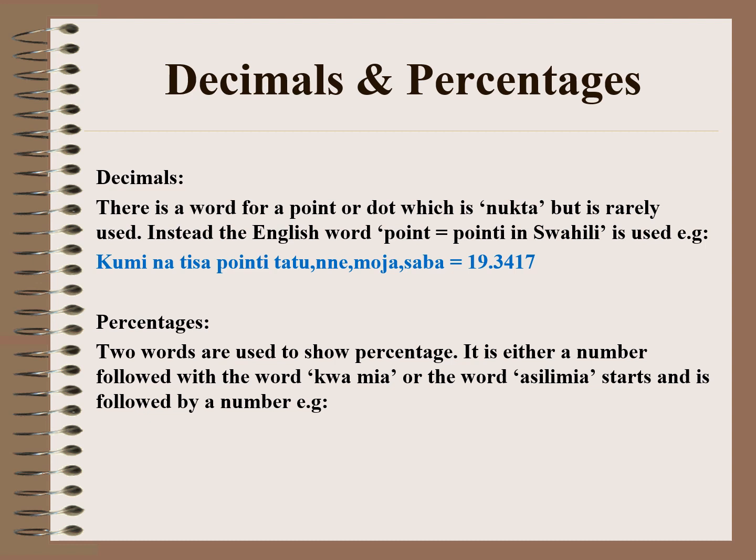On percentages, two words are used to show percentage. It is either a number followed by the word kwamia, or the word asilimia followed by a number. For example, 50% can be said as hamsini kwamia, or asilimia hamsini — they have the same meaning. Hamsini kwamia literally translates as 50 over 100.